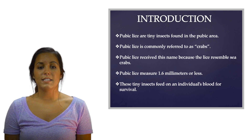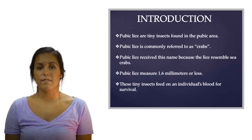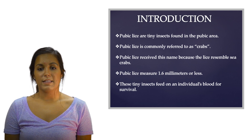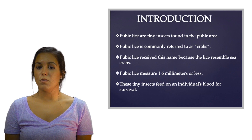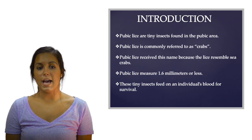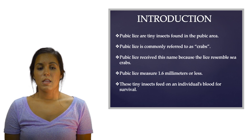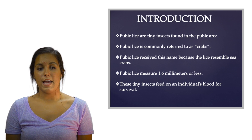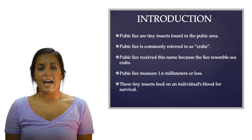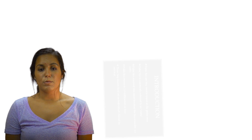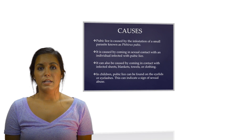Pubic lice cannot spread to an individual's scalp, but will also affect areas of the body with coarse hair, such as the beard or mustache, armpits, the chest, legs, eyelashes, and eyebrows — the latter being seen more commonly in children.